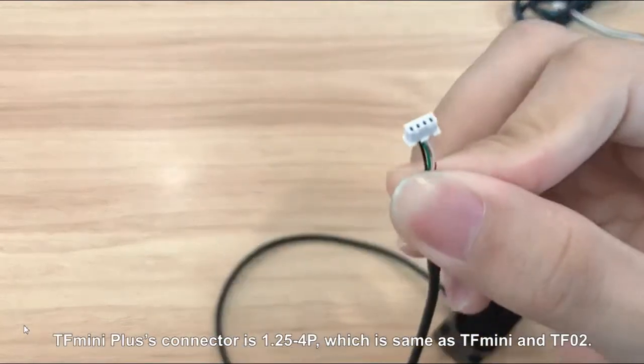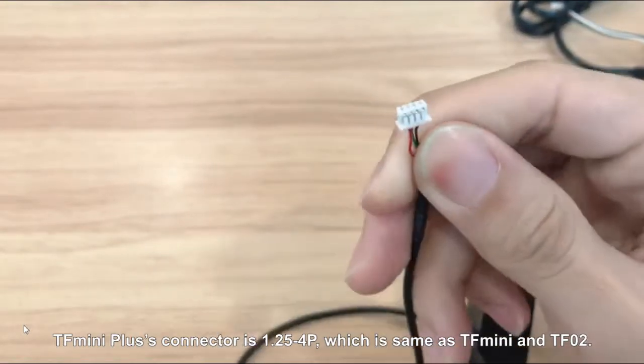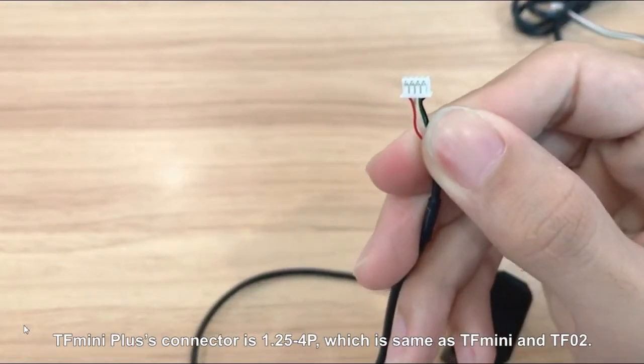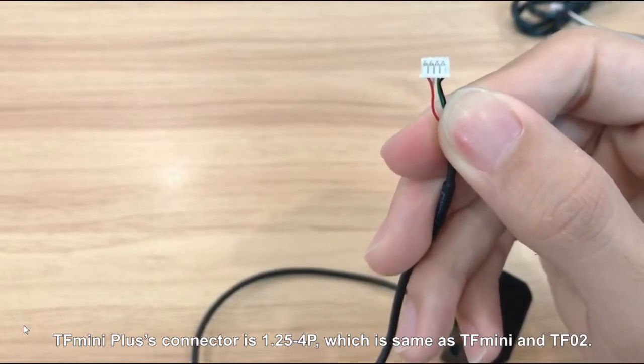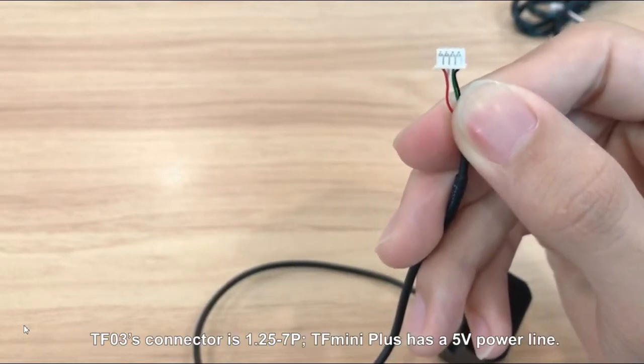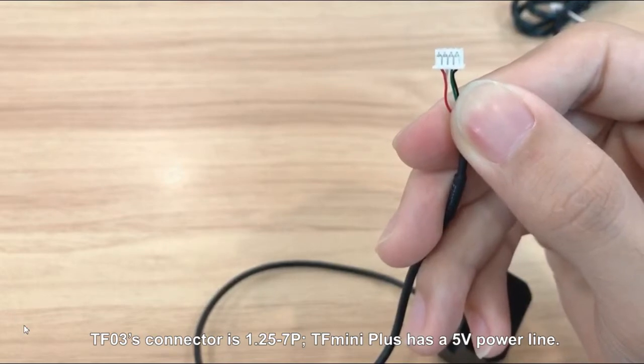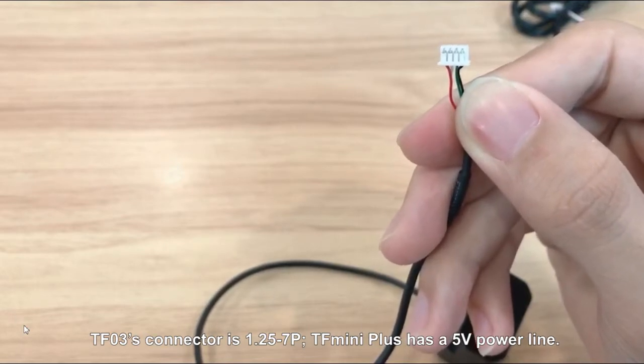TF Mini Plus connector is 1.25mm 4P connector, which is same as TF Mini and TF02. TF03's connector is 1.25mm 7P connector.